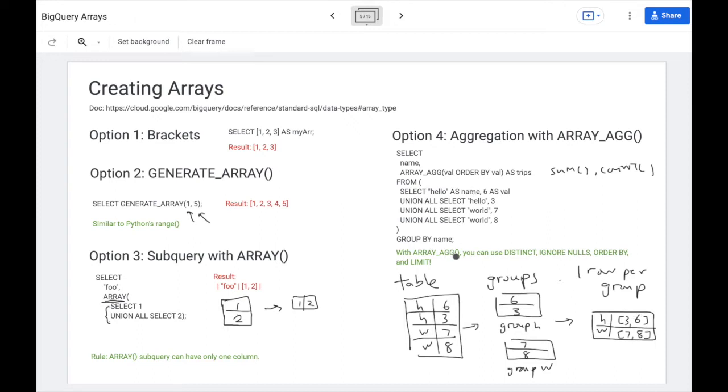So what's neat about array ag is you can use the distinct keyword, ignore nulls, order by, and limit to control how you want to form your array in your aggregation. In this example, we use order by val. So the output will have the values in sorted order already. You can use limit, for example, to say, oh, I just want the first 10 values or so.